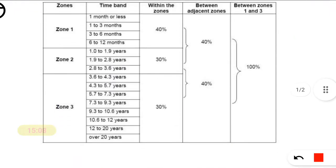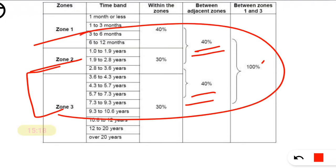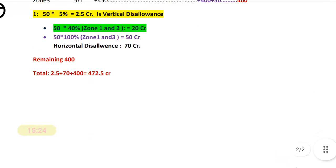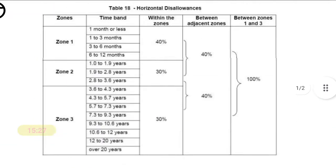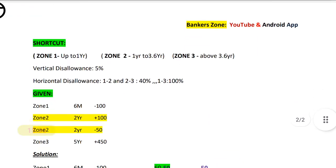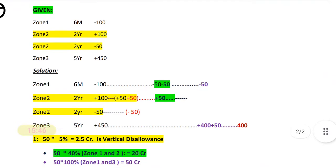In summary: Zone 1 and Zone 2 adjacent — 40%; Zone 2 and Zone 3 adjacent — 40%; Zone 1 and Zone 3 skipping a zone — 100%. This is a very easy problem. In the exam, if they provide zones that is great; if not, simply remember Zone 1 up to 1 year, Zone 2 up to 3.6 years, Zone 3 beyond that. Continue with our discussion in the next case study. All the best, and don't forget to download the application from the Play Store.